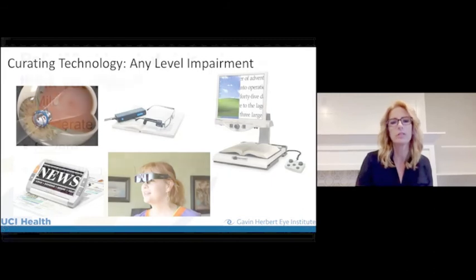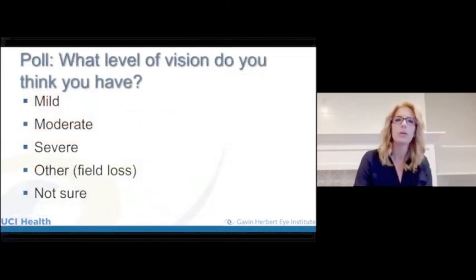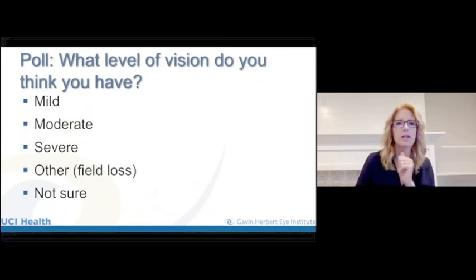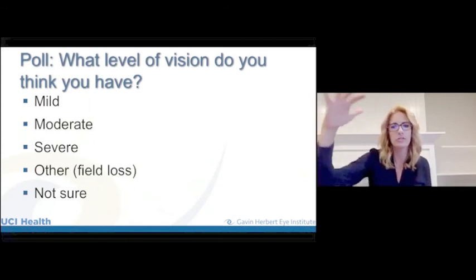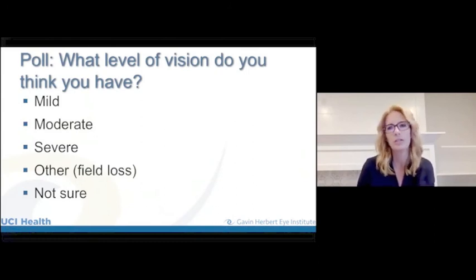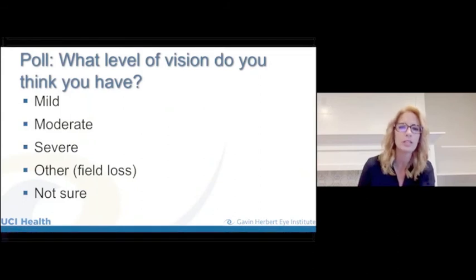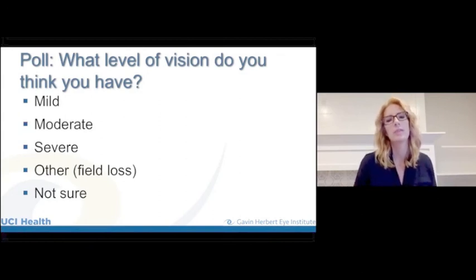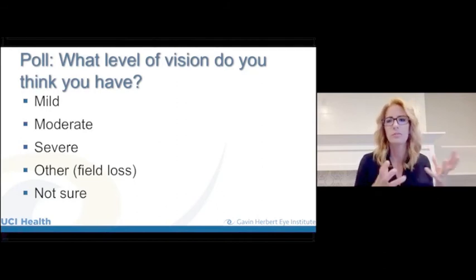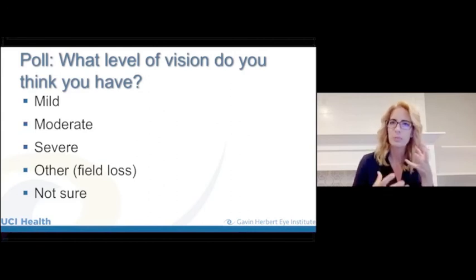A final poll asks what level of vision impairment you think you have: mild, needing some magnification and lighting; moderate, where over-the-counter magnifiers aren't enough; severe, where some things need to be read aloud and a large video magnifier is needed; field loss; or not sure. My role is to curate technology, learn what's new, and work with Braille Institute, Dale McIntosh Center, therapists, and orientation and mobility specialists to bring it all together.